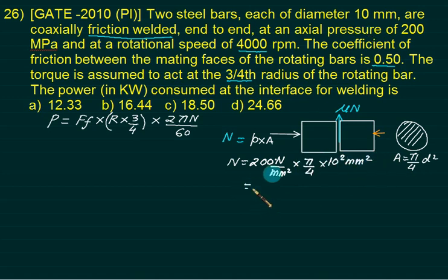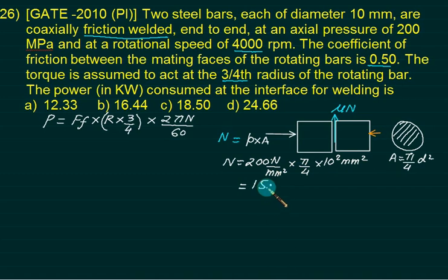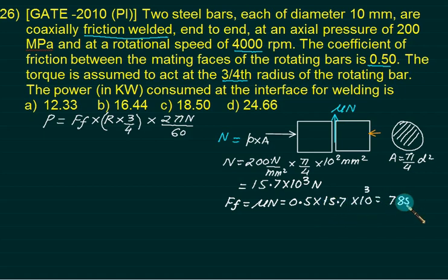You will get this value equals to 15.7. You write your answer as 10 to the power 3. Never write the answer in kilo because your calculations are not finished. Newton. This is normal force. So what is friction force? Friction force is simply mu into N. Coefficient of friction is given as 0.5. So 0.5 into 15.7 into 10 to the power 3. This one is 7854 Newton. Remember, the unit of this quantity must be equal to Newton meter. This quantity is radian per second. That is match. You have to match the first quantity.